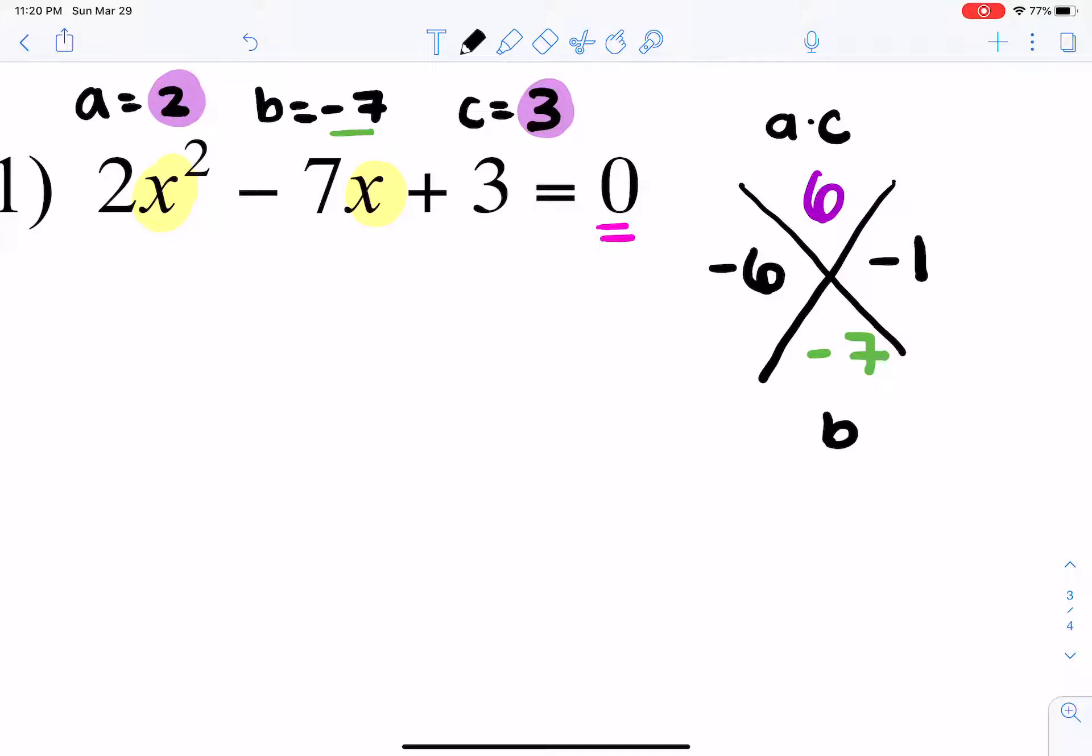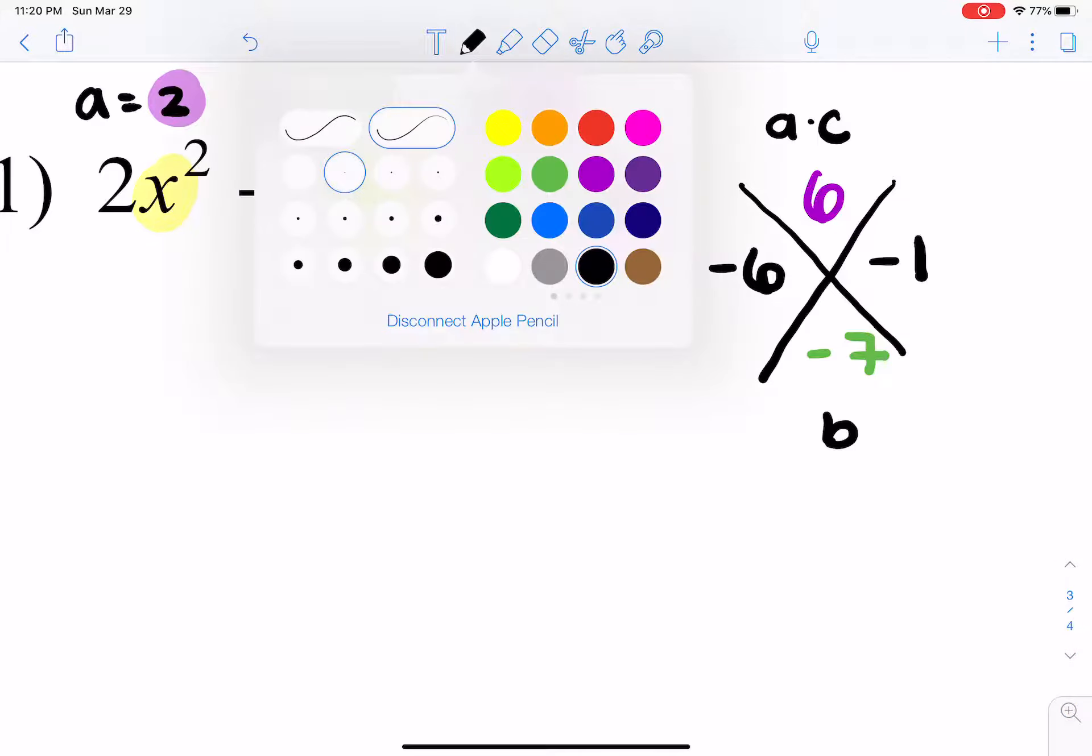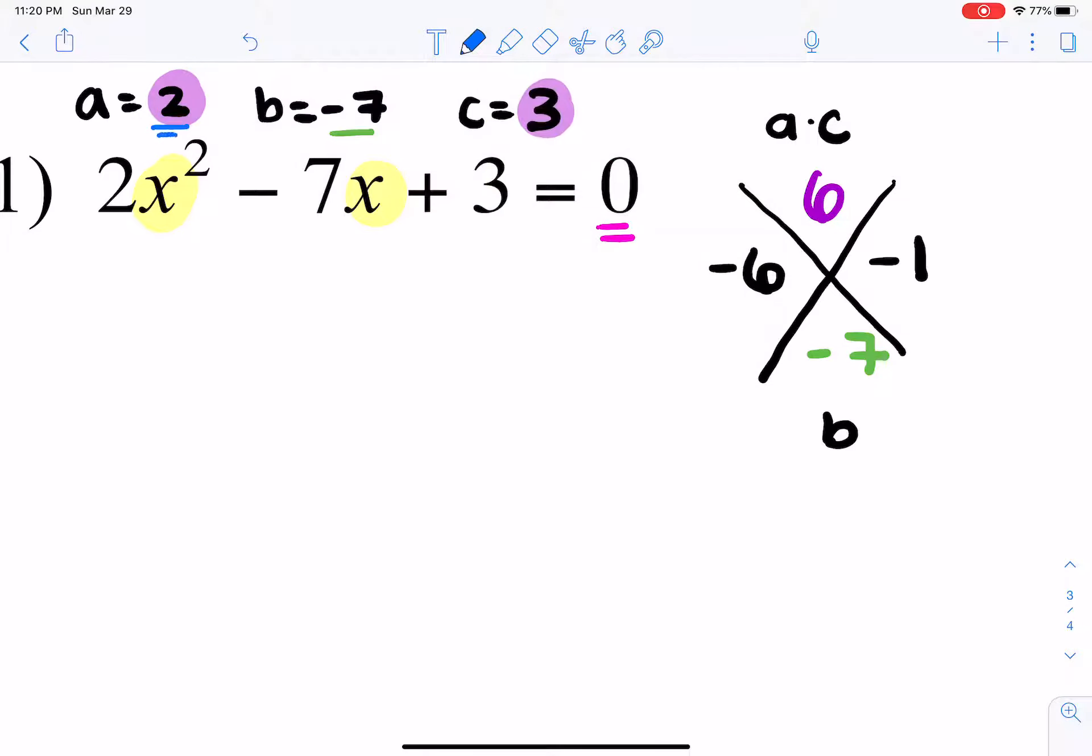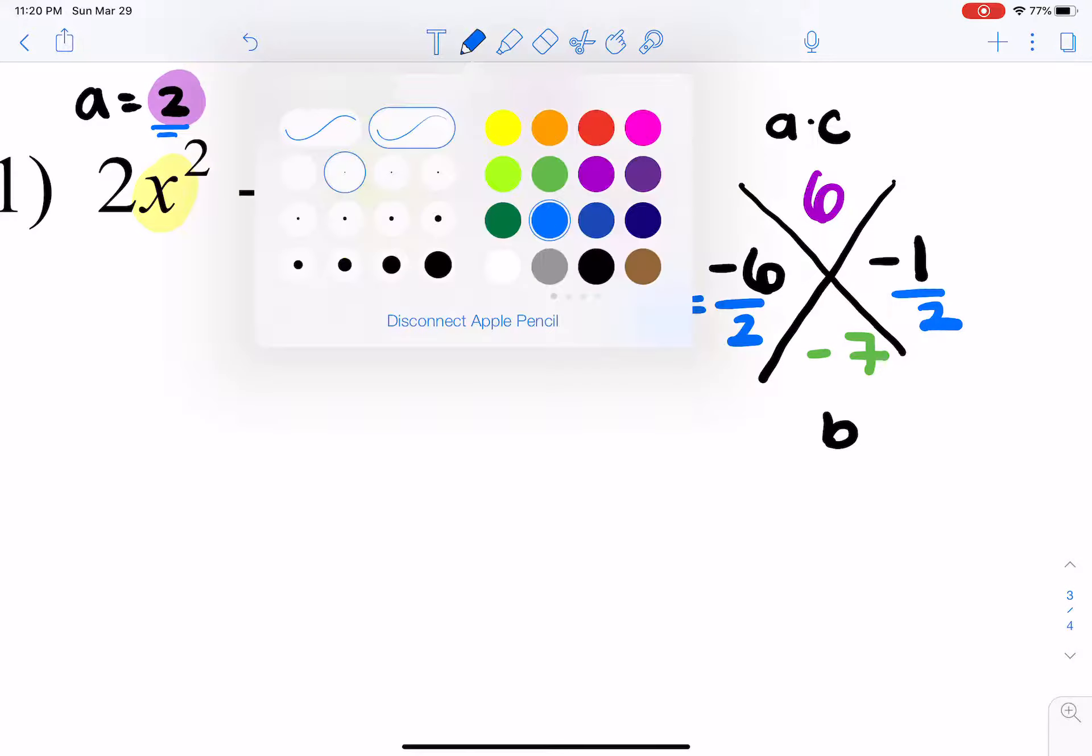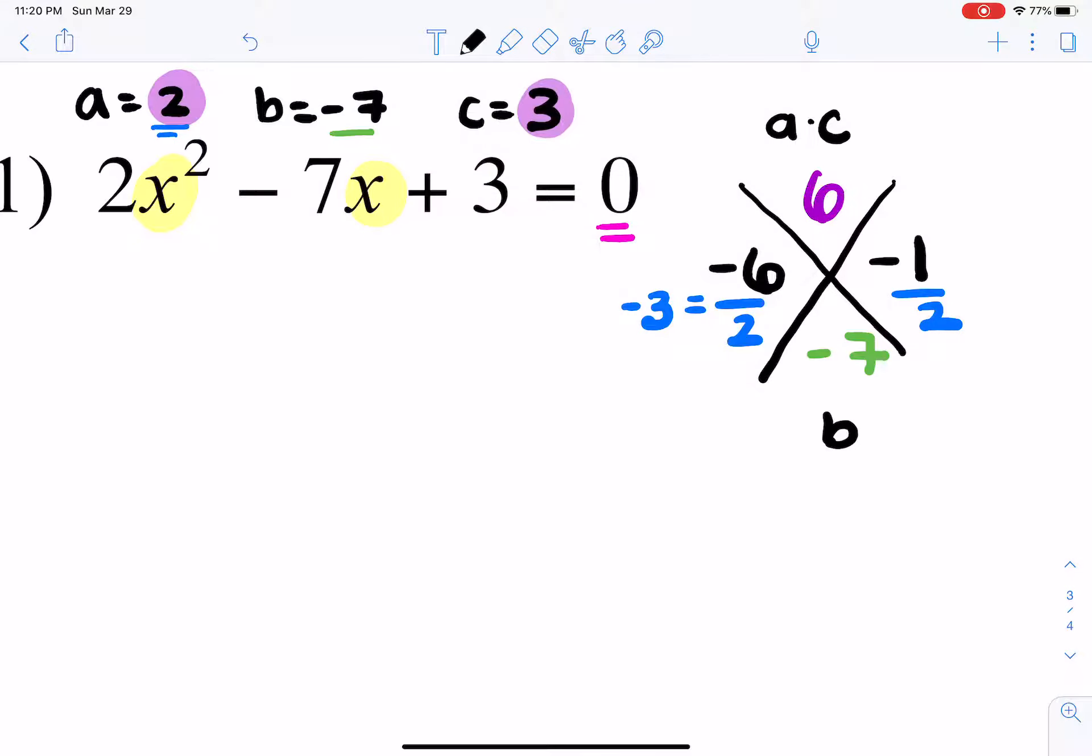Now we look at the a value. Since the a value is equal to 2, we're going to divide it by 2. Simplify - this is negative 3. So, my two factors are x minus 3 and x minus 1 half, which equals 0.